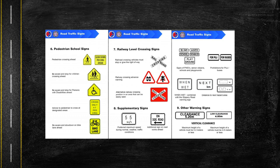Seven is railway level crossing signs. We usually see these near a railway. These include: railroad crossing — vehicles must stop or give the right of way, railway crossing advance warning, and alternative railway crossing position in an area that can be easily seen. Eight is supplementary signs, such as preferred maximum speed during normal weather and traffic conditions.